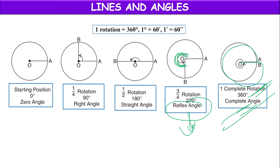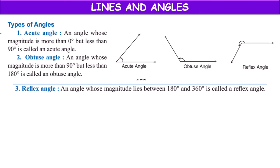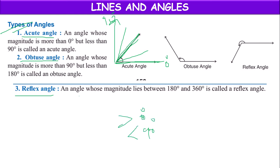So that is about angle and its parts — rotation and its parts. Next we have types of angles. We have mainly three types of angles based on measurement. One is acute angle, another is obtuse angle, and the third is reflex angle. An acute angle means an angle whose measurement is greater than 0 degrees and less than 90 degrees — any such angle is considered an acute angle.